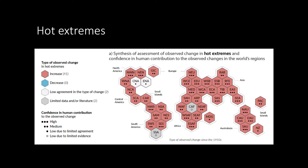This figure shows the assessment of observed change in hot extremes and the confidence in human contribution to the observed changes in the world's regions. This assessment is mainly based on changes in metrics based on daily maximum temperatures. The hexagons represent different world regions. The colours represent the outcome of the assessment. The red colour indicates that there is at least medium confidence. The confidence level for human influence on these observed changes is based on assessing trend detection and attribution, and is indicated by the number of dots.